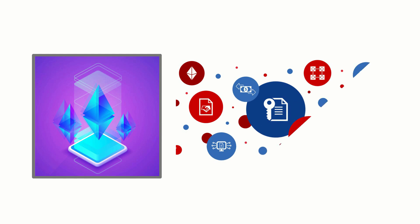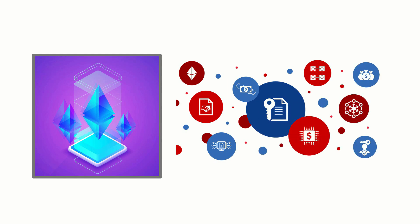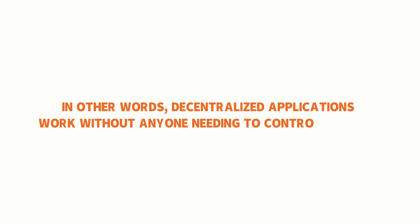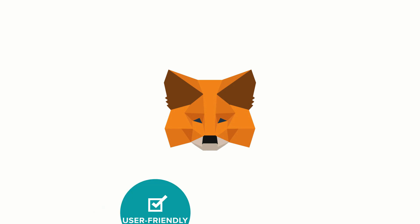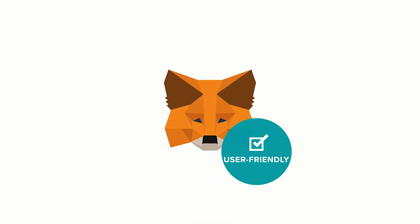All of this is thanks to the Ethereum blockchain. The Ethereum blockchain is a publicly available ledger that stores and executes smart contracts. Smart contracts are like regular programs except they're designed to automatically execute when certain conditions are met, making them ideal for running decentralized applications on the blockchain. Decentralized applications work without anyone needing to control the code, and MetaMask is a great example of one — it makes using decentralized applications more user-friendly, which in turn encourages more people to use the blockchain.